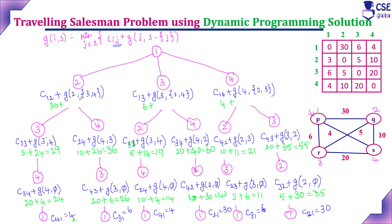Now we select the minimum at each node, since the objective of TSP is to find the minimum cost. After visiting vertex 2, minimum of 29 and 36 is 29, so total is 30 + 29 = 59. After visiting vertex 3, minimum of 19 and 60 is 19, so total is 6 + 19 = 25. After visiting vertex 4, minimum of 21 and 55 is 21, so total is 4 + 21 = 25.